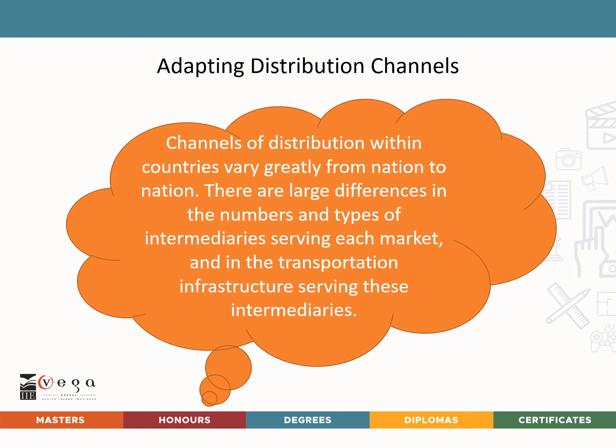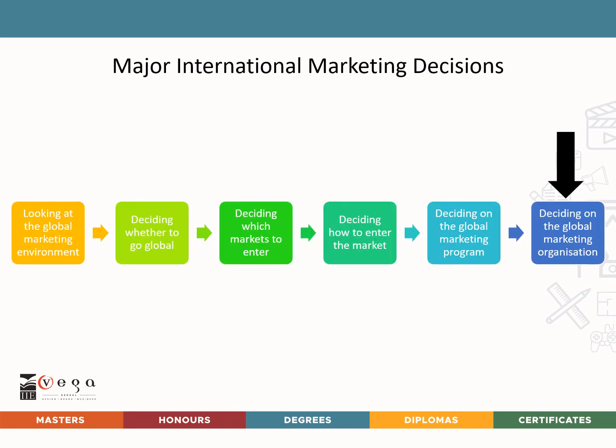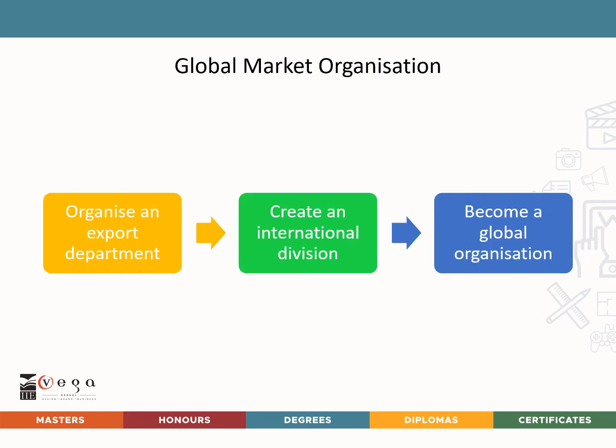Channels of distribution within countries vary greatly from nation to nation. There are large differences in the number and types of intermediaries serving each market and in the transportation infrastructure available. The final major decision is deciding on the global marketing organization. Companies manage international marketing activities in at least three different ways: first organizing an export department, then creating an international division, and finally becoming a global organization.